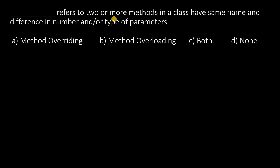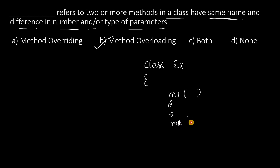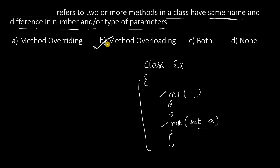Dash refers to two or more methods in a class having the same name but a difference in the number and/or type of parameters. In a class having two methods with the same name but different parameters, the answer is method overloading. For example, class Example has method m1 with no parameters and another m1 with one parameter. This is called method overloading.